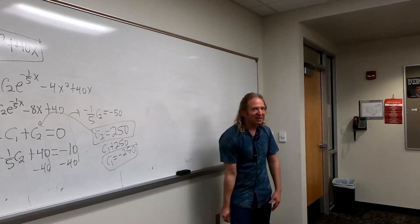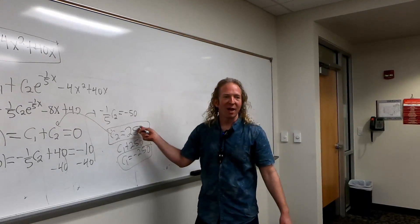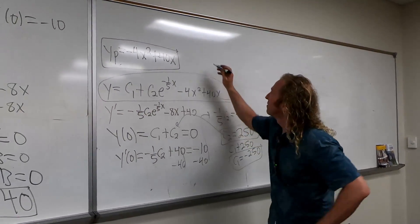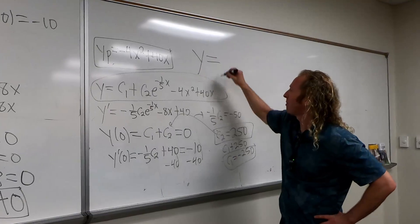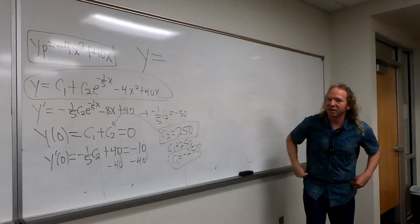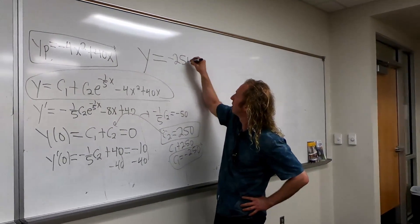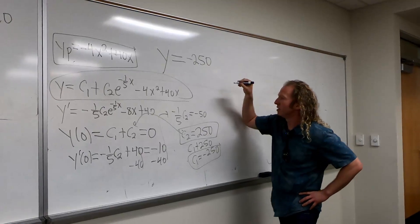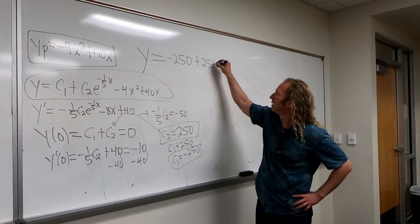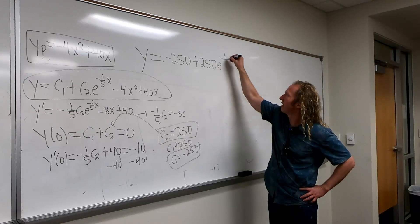We've just got to plug these back in. The final answer is: y equals negative 250 plus 250 e to the negative 1/5 x, minus 4x squared plus 40x.